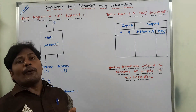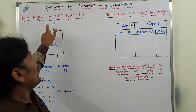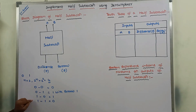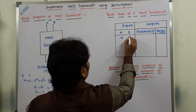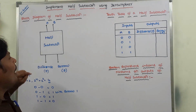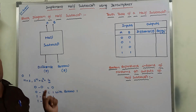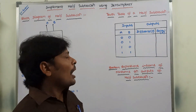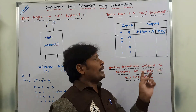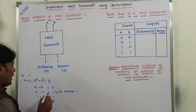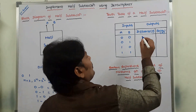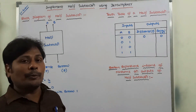What is the truth table of the half subtractor? We know that a half subtractor takes two inputs A and B, giving four possible input combinations: 0,0 then 0,1 then 1,0 and 1,1. It produces two outputs: difference and borrow. For A=0, B=0: 0 minus 0 gives difference 0, no borrow generated, so borrow is also 0. For A=0, B=1: difference value is 1 and borrow value is also 1.